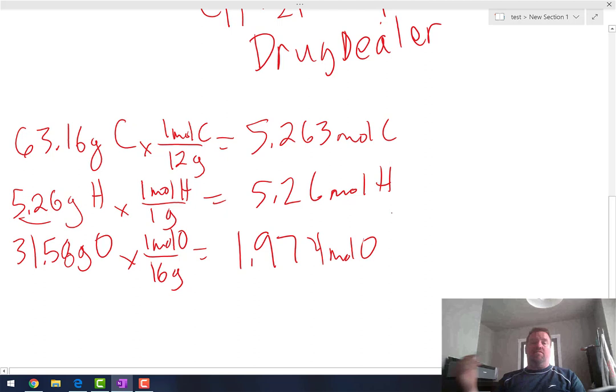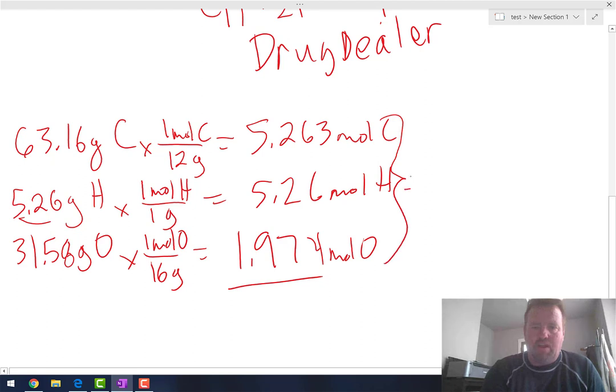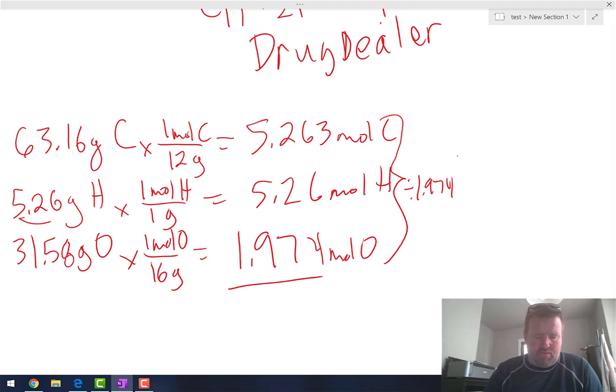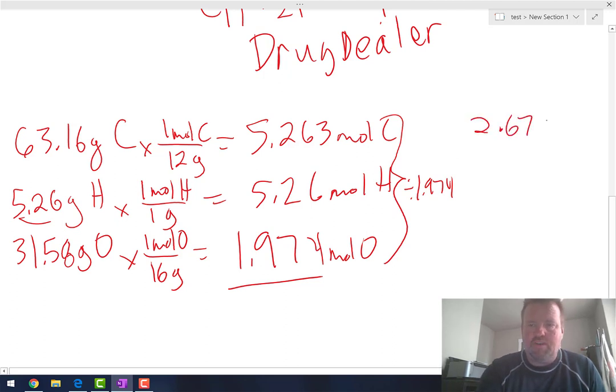And now remember, our next step is to divide by the smallest of those numbers. So 1.974 is our smallest. So we're going to divide all of these by 1.974. So 5.263 divided by 1.974 equals 2.67 carbons. Hydrogen, you're going to get the same thing. 2.67 hydrogens. And 1.974 divided by 1.974 is 1 oxygen.